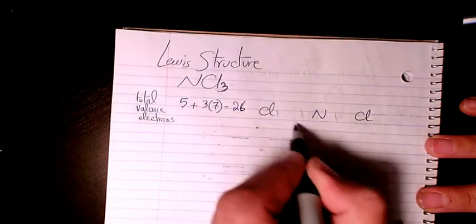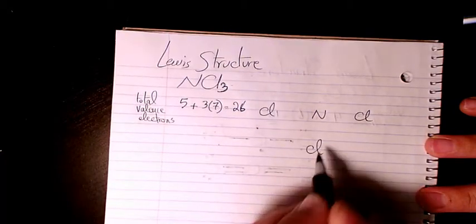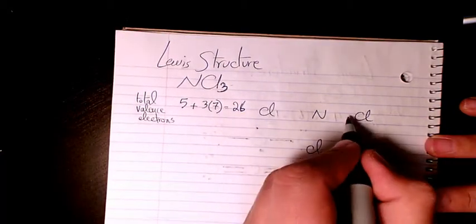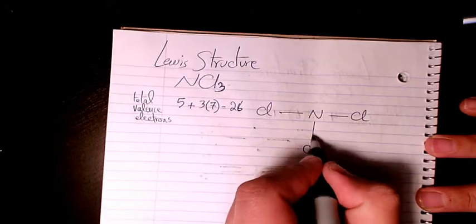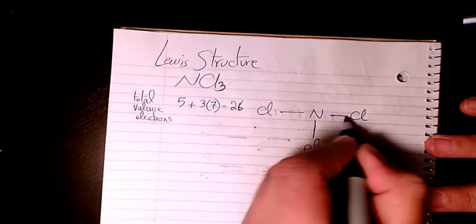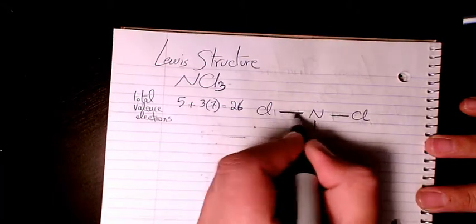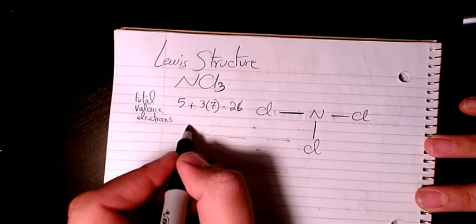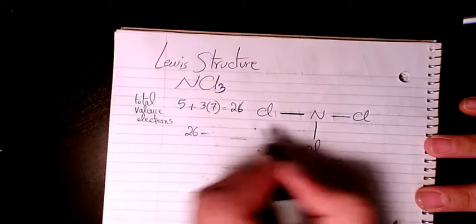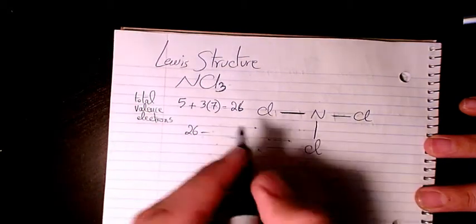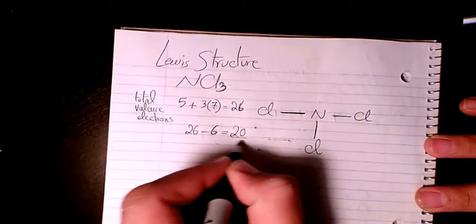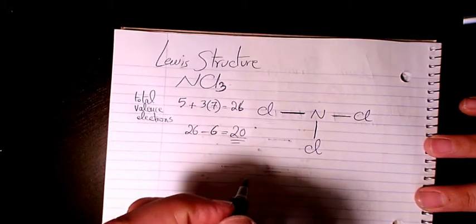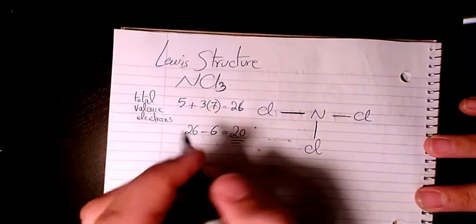I put N in the center and three Cl's on the side, and we draw single bonds to connect all these elements. We have 26 minus the three bonds — which is six electrons — so we have 20 remaining electrons.